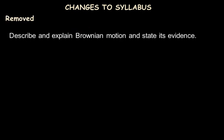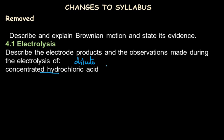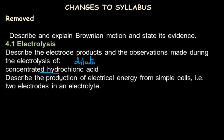Now looking at topics removed from the syllabus — the first removal is Brownian motion, including describing and explaining it and stating it as evidence. From electrolysis, describing electrode products during electrolysis of concentrated hydrochloric acid is removed; only dilute solutions and other solutions like copper sulfate, sodium chloride, and brine remain. The production of electrical energy from simple cells is also removed.